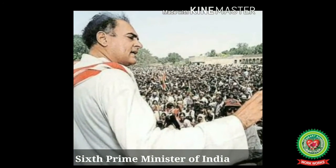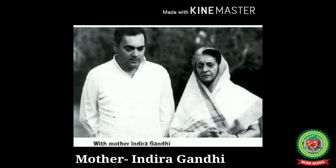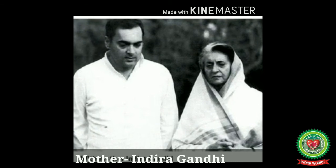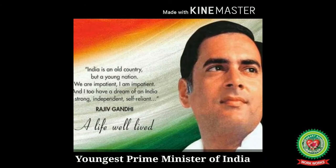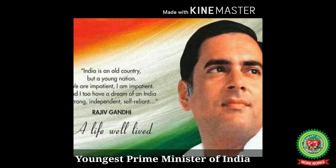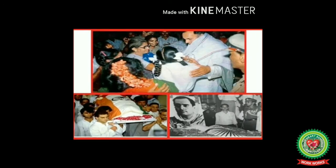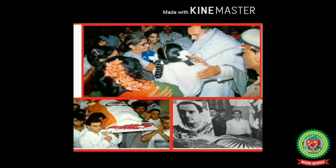Next one is Rajiv Gandhi. Rajiv Gandhi was the sixth Prime Minister of India. He took office after the assassination of his mother, Prime Minister Indira Gandhi, to become the youngest Indian Prime Minister at the age of 40. He was also assassinated by a suicide bomber in Chennai on 21st May 1991.